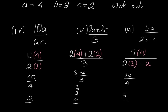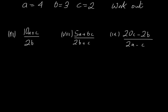3 more examples for you to do and then it will be time for you to practice some of your own. Again, A, B and C are the same: A is 4, B is 3 and C is 2. Work out the following: 10A plus C all divided by 2B. So that's 10 multiplied by A which is 4, and we're going to add C which is 2, all divided by 2B where B is equal to 3. So the numerator: 10 multiplied by 4 is 40 plus 2 is 42, divided by 2 times 3 which is 6. 42 divided by 6 is clearly 7. That's our answer.